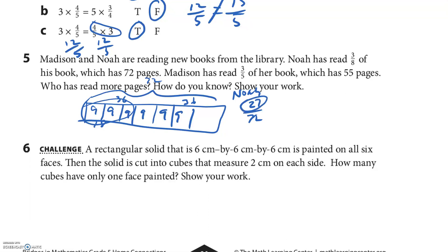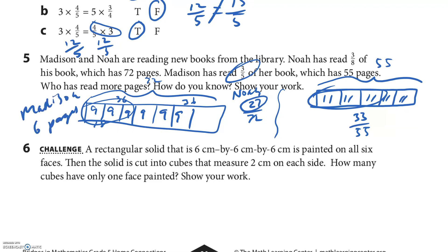And then we have Madison. Three-fifths of Madison's book. The whole thing is fifty-five. So fifty-five divided by five is eleven. And they had three-fifths. So that would be thirty-three. So who read more? I think Madison read more. And Madison read six more pages.